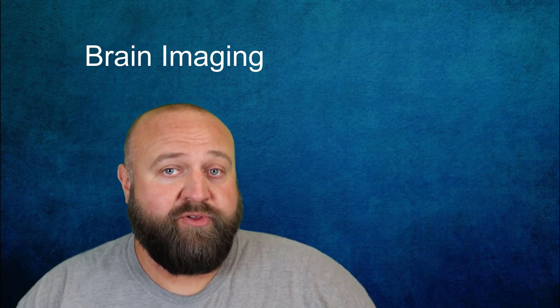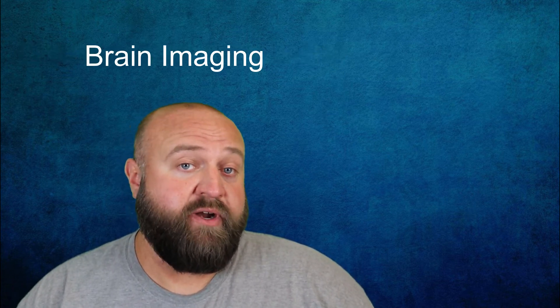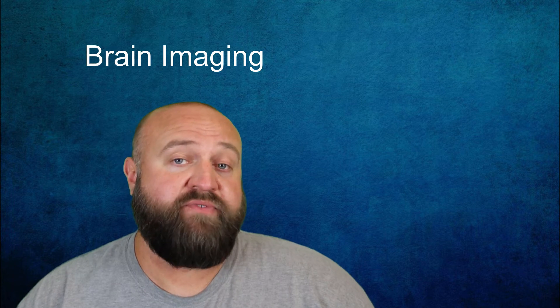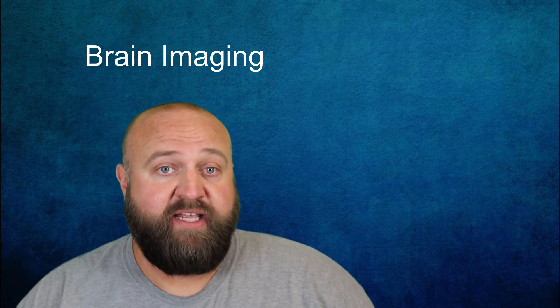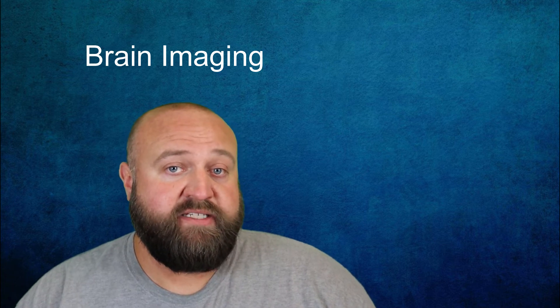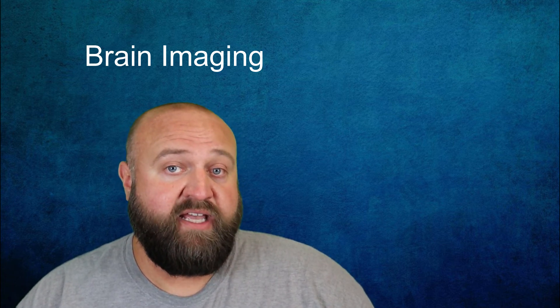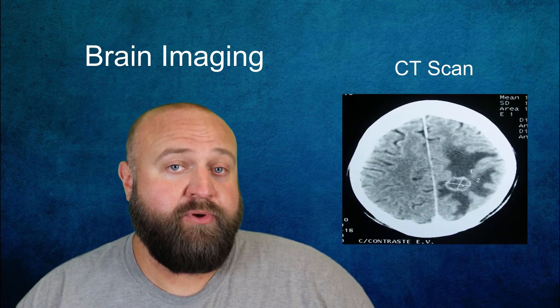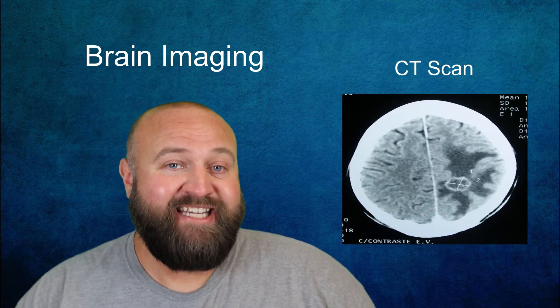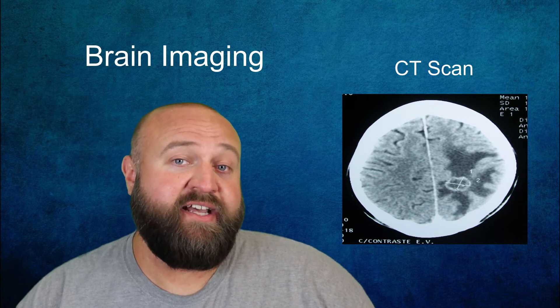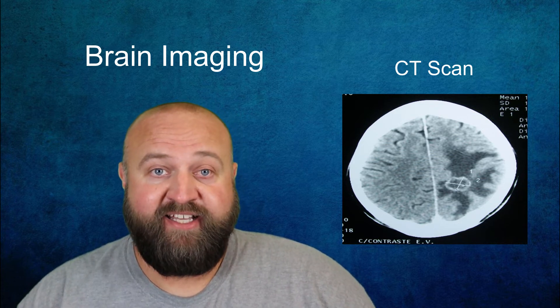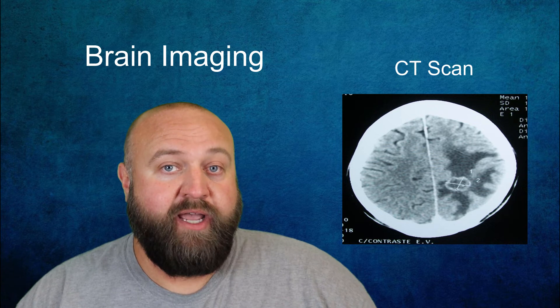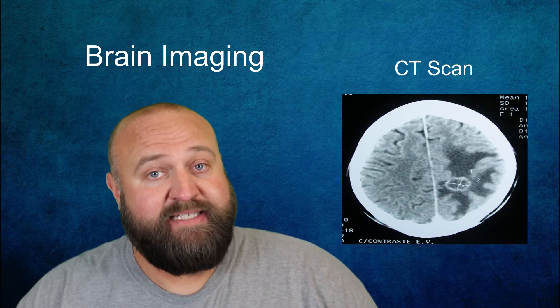Much of the new information we've learned about how the brain works is directly the result of some of the huge advances in imaging techniques that have been discovered over the past few decades. These imaging techniques include things like CT scans, PET scans, and MRIs. CT scan stands for computerized tomography. A CT scan uses x-rays to detect differences in brain density. It can give an image of the brain, but it's kind of a basic image.